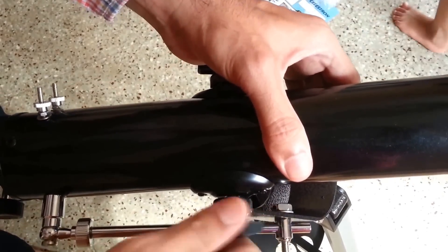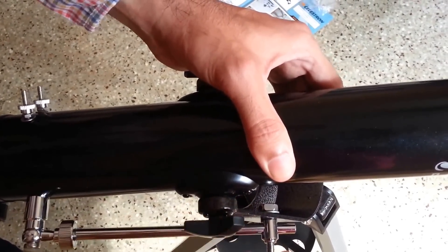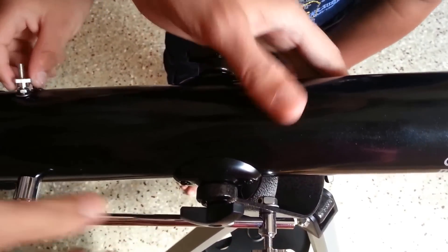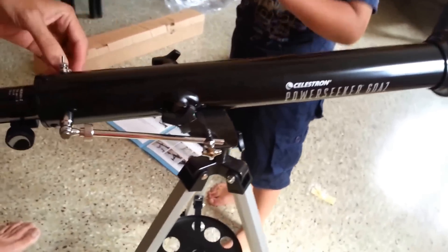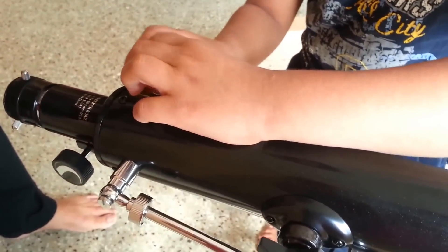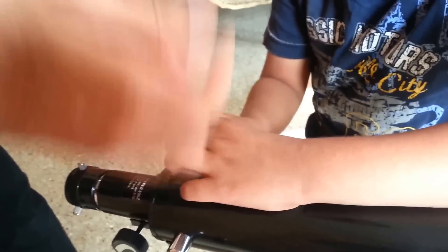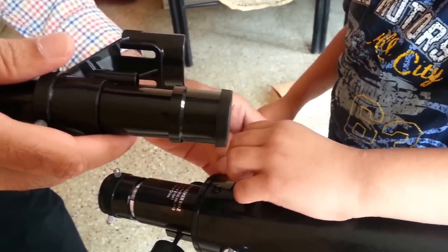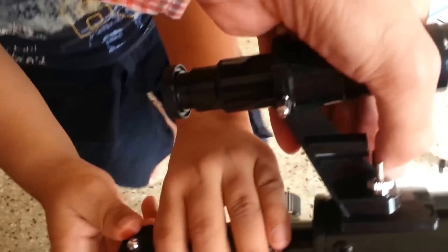This is for the fine controls. These screws are for the finderscope. Where I am going to fix the finderscope. Can you take this out? So I am going to keep the caps out here. Now you can see the finderscope is fixed firmly here.